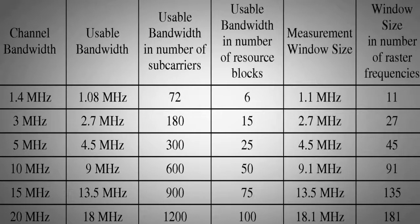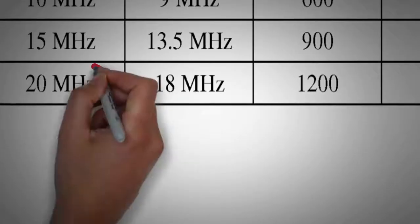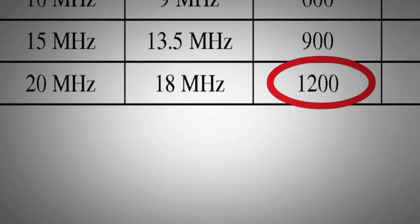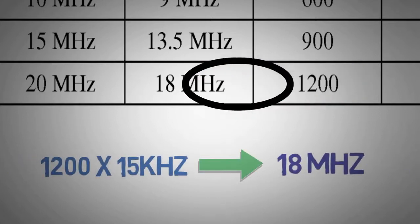Unlike in GSM or UMTS, LTE supports variable bandwidth as shown in the table. As the bandwidth increases, so does the number of sub-carriers in it. Let's take for example, LTE bandwidth of 20 megahertz, which has 1,200 sub-carriers and thus a sub-carrier bandwidth of 18 megahertz.